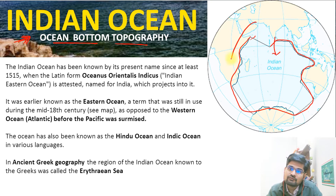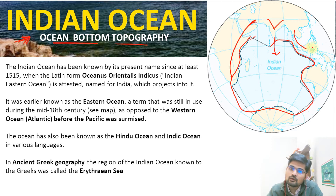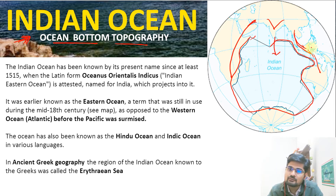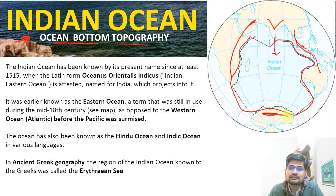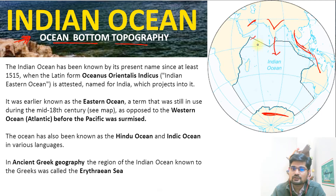Here we have Africa, here we have Saudi Arabia, then you have the South Asian part — that is the Indian part. On the eastern part, what we have is the Malay Peninsula, Australia, Malaysia, Indonesia, and all those areas. In the south, we have Antarctica. This is how the Indian Ocean is bounded from all sides, as we can observe on this map.